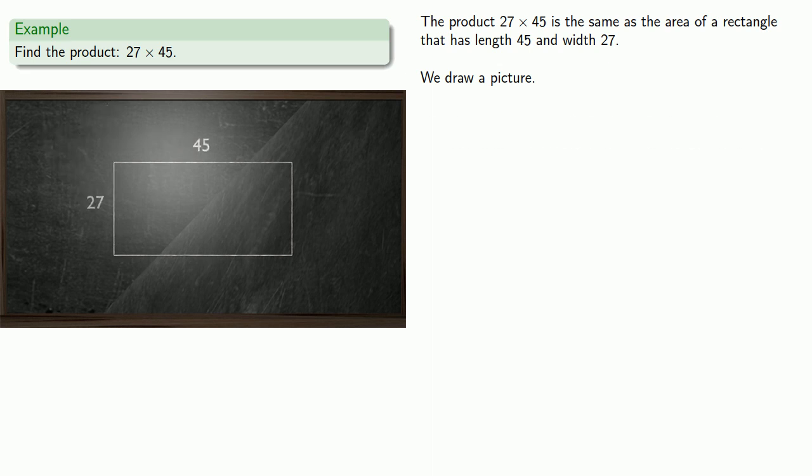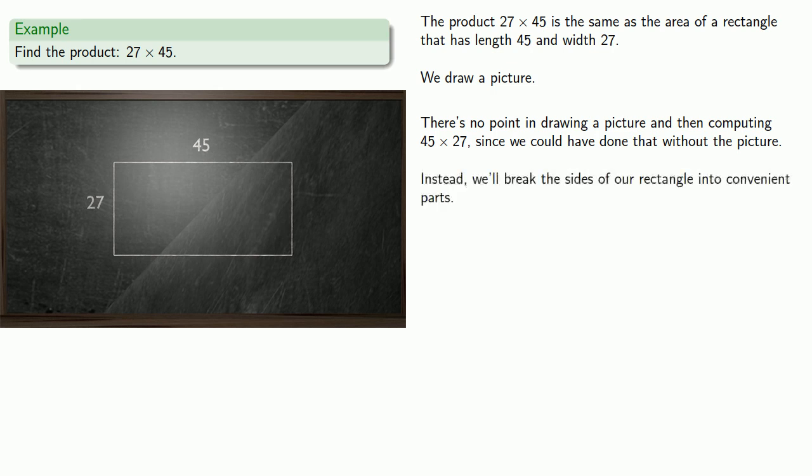Now, it's important to understand there's no point in drawing a picture and then computing 45 times 27, because we could have done that without the picture. The advantage to having the picture is that we could do things with the picture that might not be obvious with the numbers themselves. And in this case, we'll break the sides of our rectangle into convenient parts.